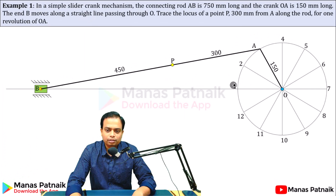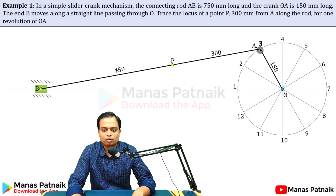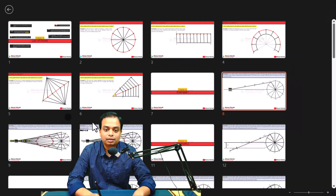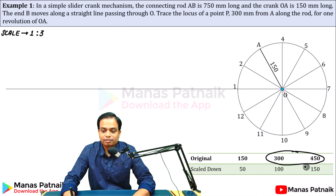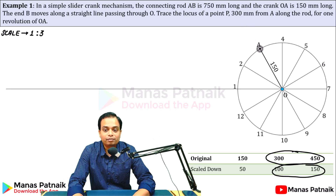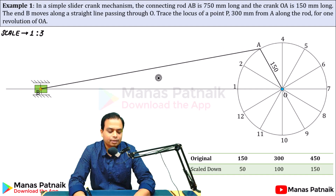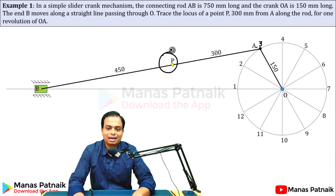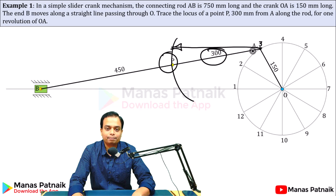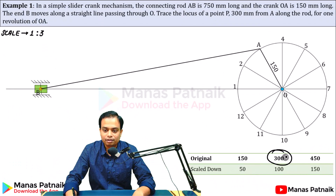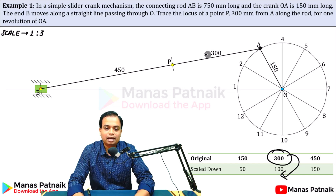From point A (at position 3), the distance to B is 750 mm in real — that is 250 mm on your drawing sheet. With position 3 as center, cut an arc of 250 mm; this gives you the precise location of point B. Point P lies at a distance of 300 mm from A in real, which is 100 mm on your drawing sheet. With A as center, cut an arc of 100 mm to get point P.